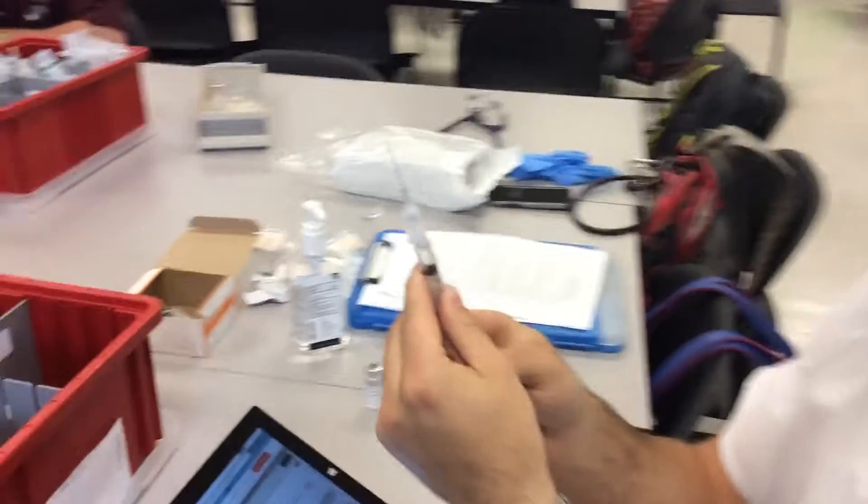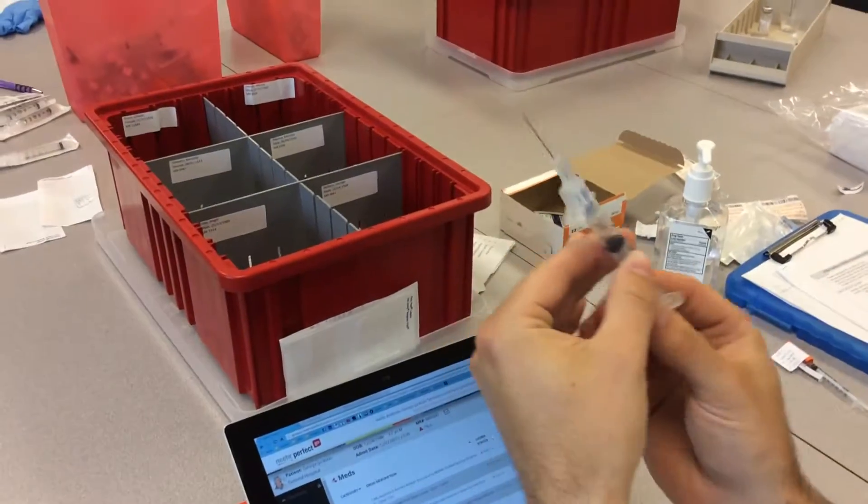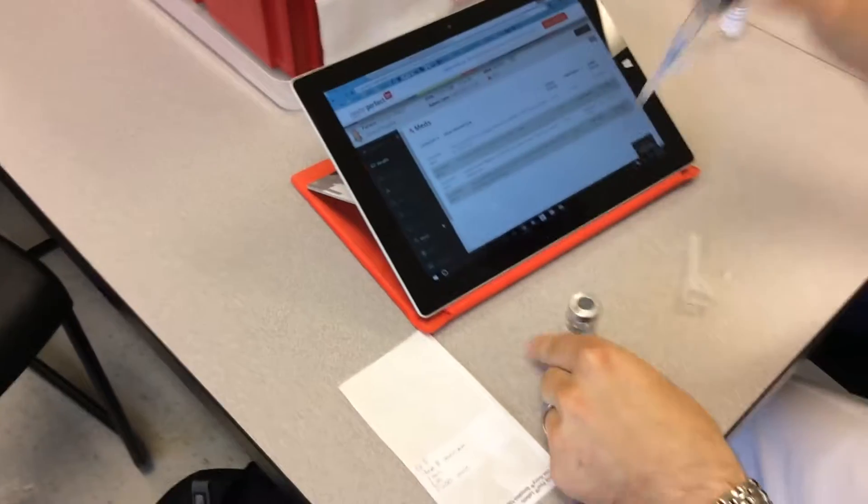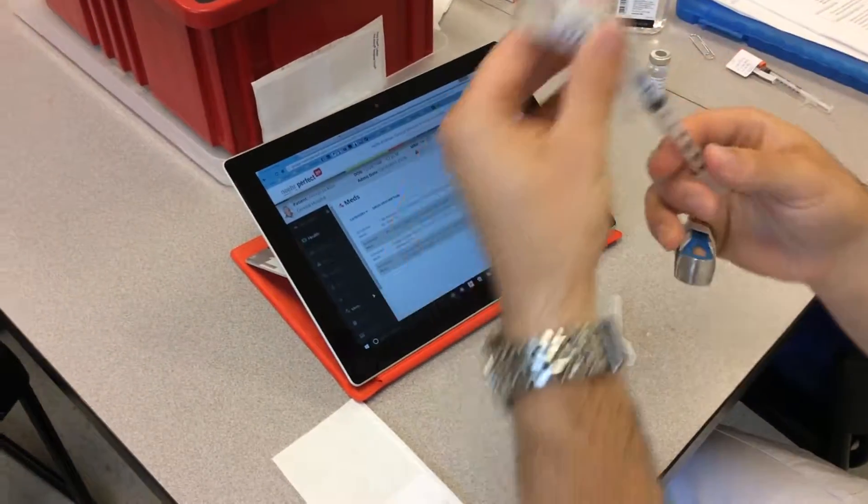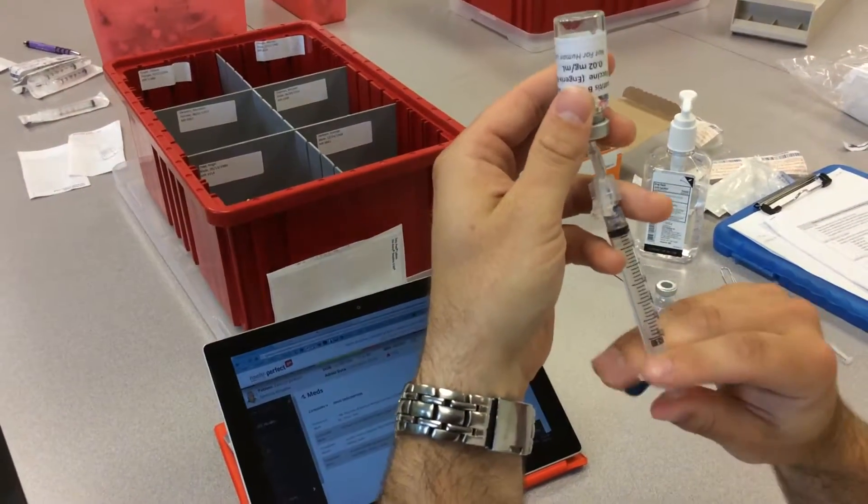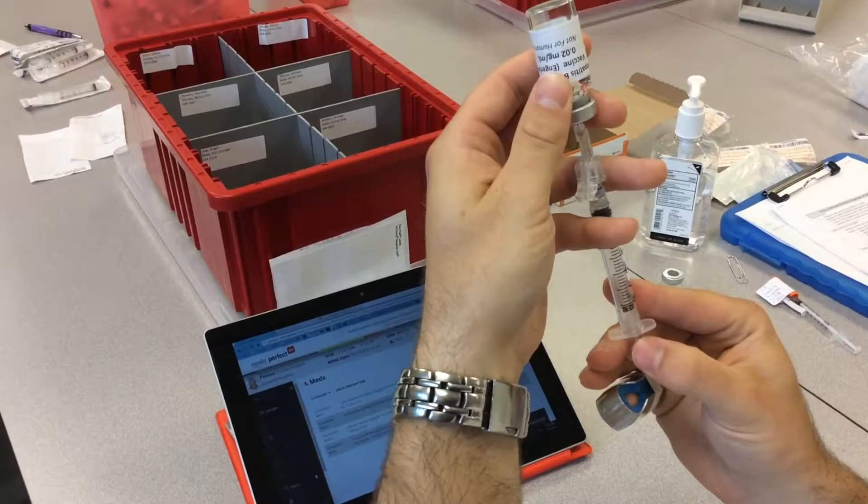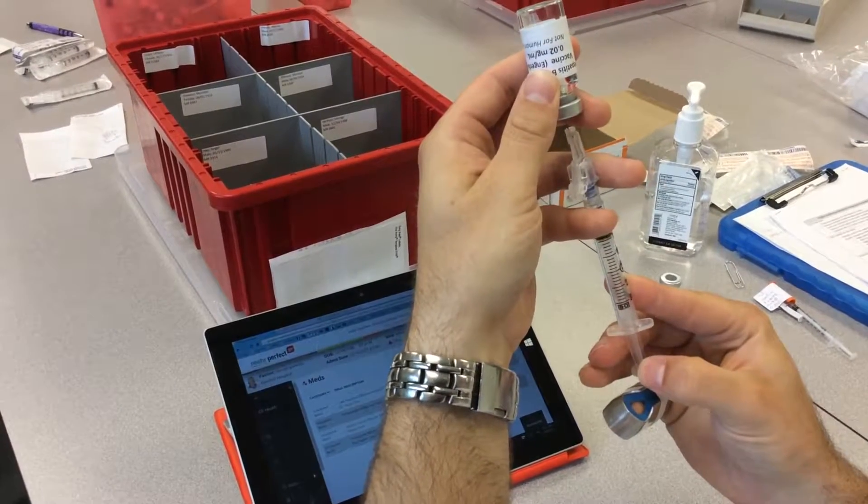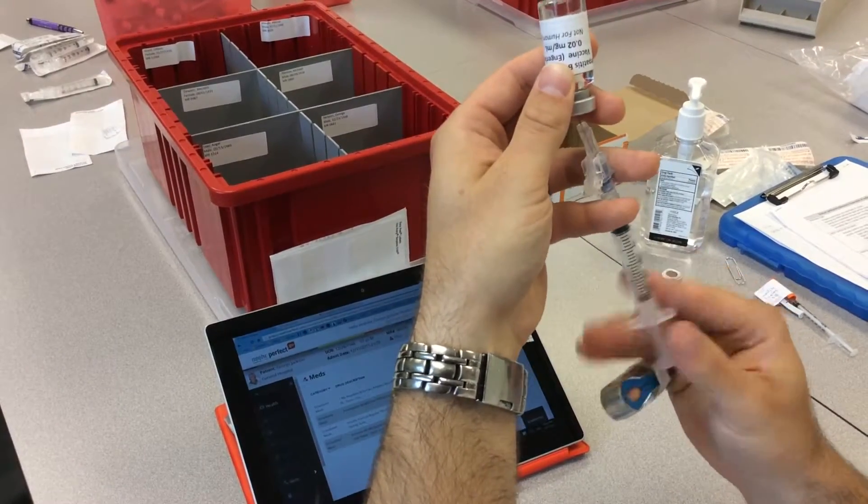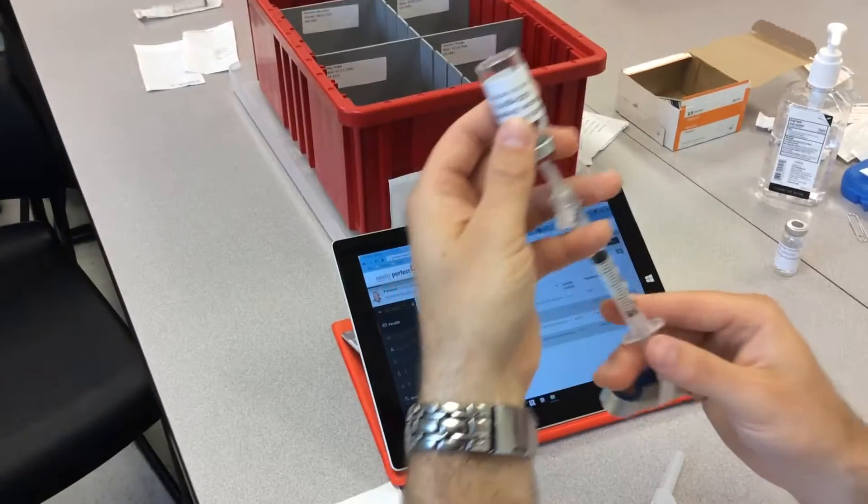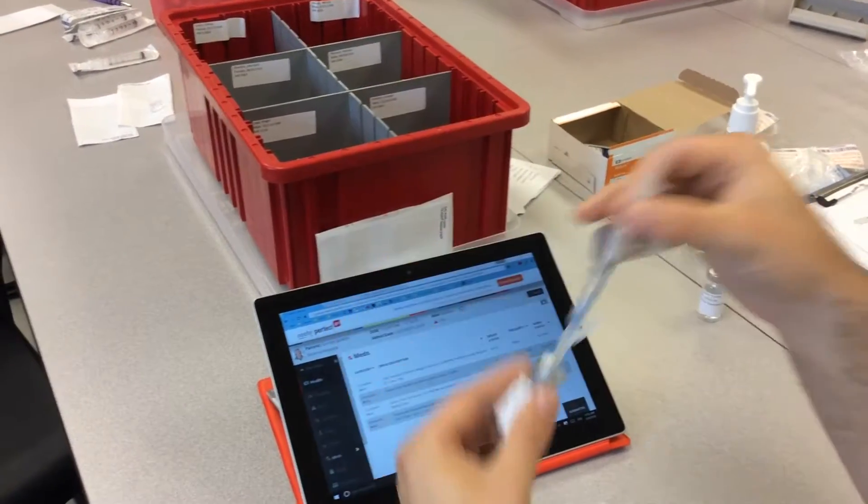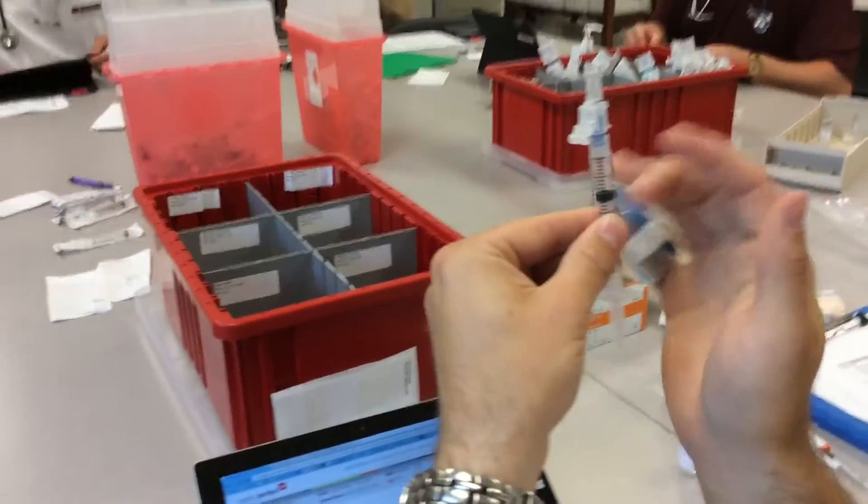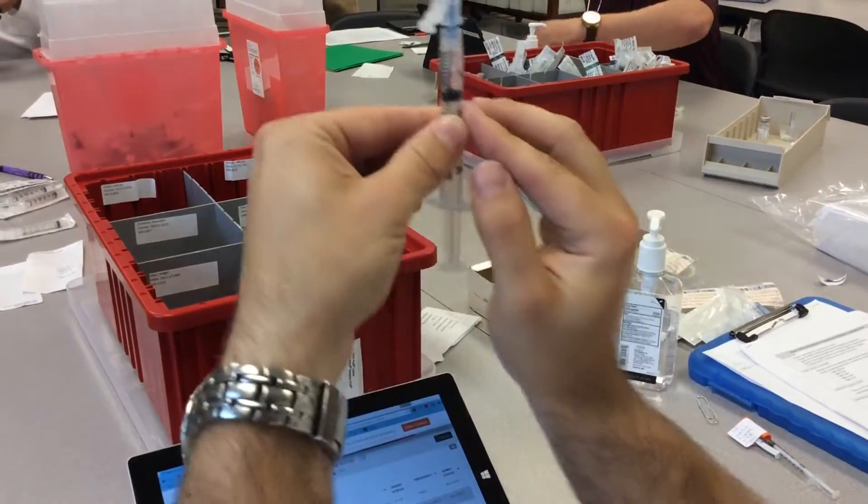This is one milliliter, so I'm going to draw back one milliliter of air. I'm going to put that into the Hep B surface antigen vaccine, inject the air, make sure all the air is out, and pull back until I get one milliliter. Make sure any bubbles are out.